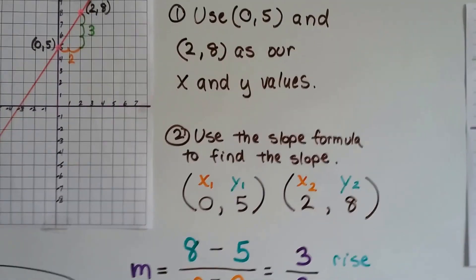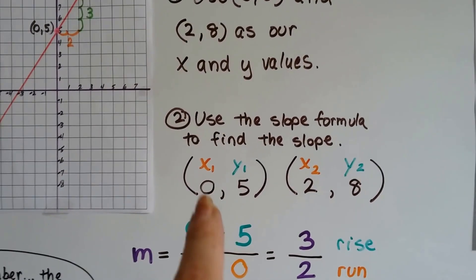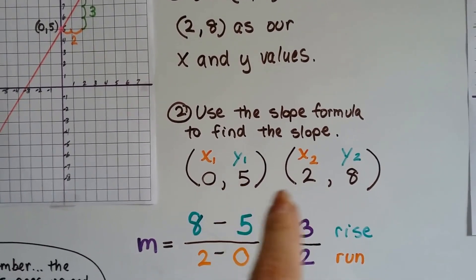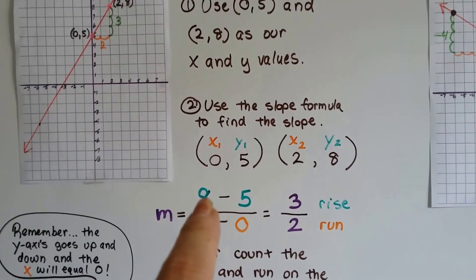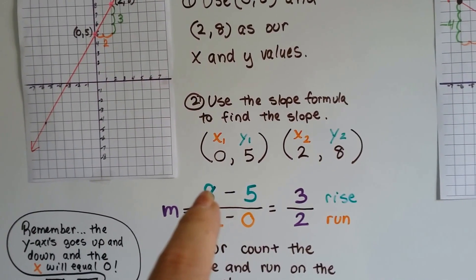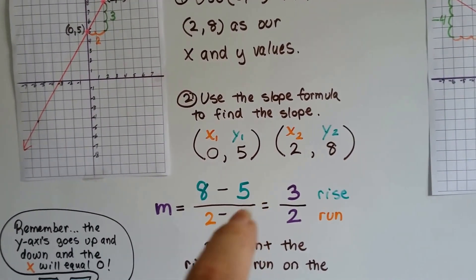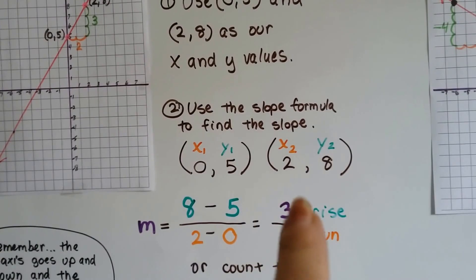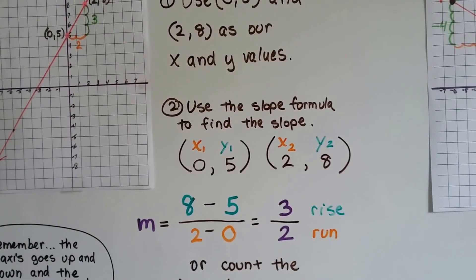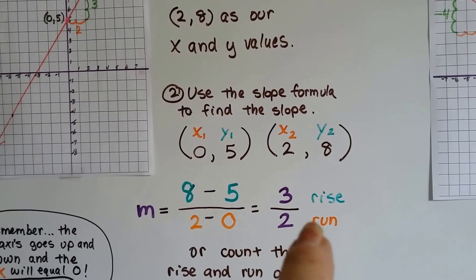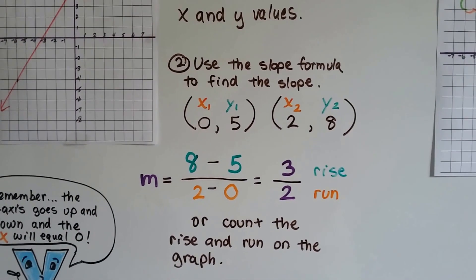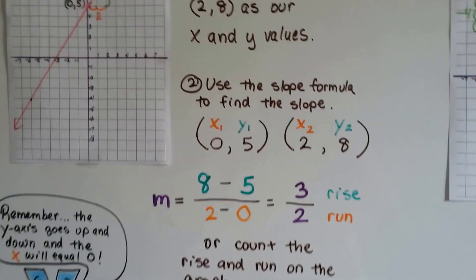This is going to be x1 and y1 and this is going to be x2 and y2. I'm going to use the slope formula to find the slope. We've got x1, y1 and x2, y2. The slope formula says to subtract and take y2 minus y1, that's 8 minus 5, we get a 3 for our rise. And then we have to take 2 minus 0 for our run and that's a 2. We could also count the rise and the run on the graph.